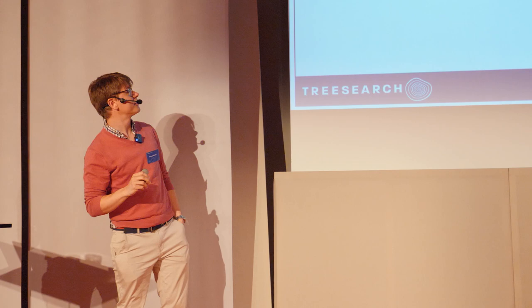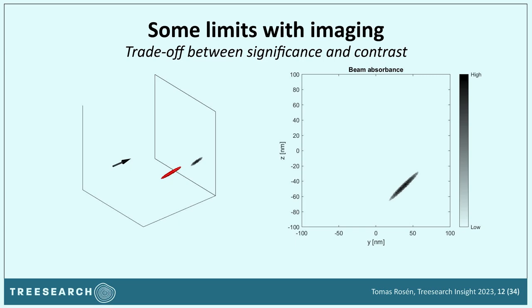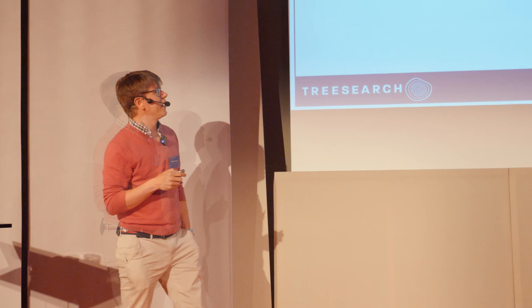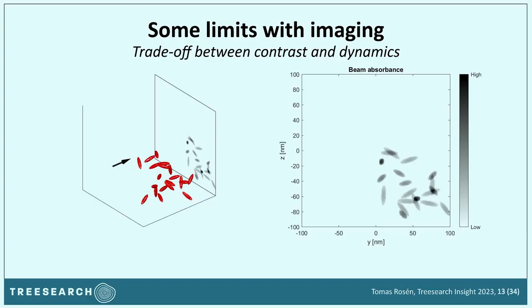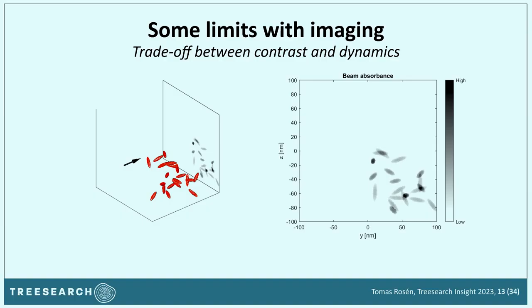Another fundamental issue with imaging is that adding more material to increase significance will at some point blur your image — it becomes more difficult to distinguish what you're looking at. That's also usually why you need thin or dilute samples when imaging. And there's a problem with dynamics: if you have stuff moving in your sample during exposure, your images blur out. You might decrease exposure time, but then you lose photons and contrast instead.